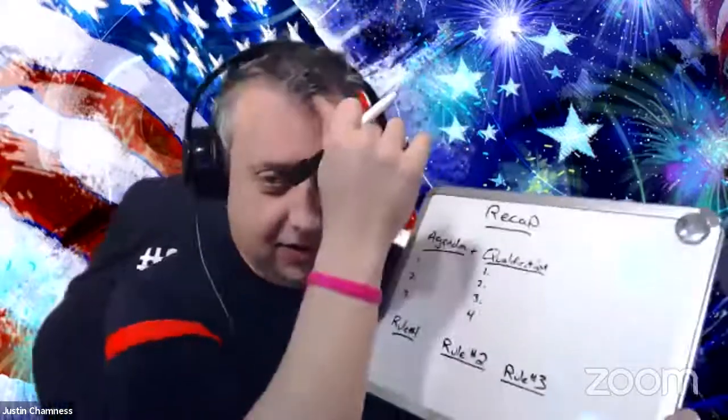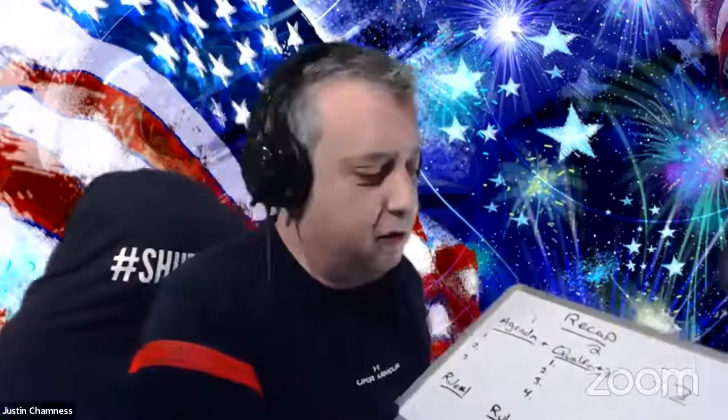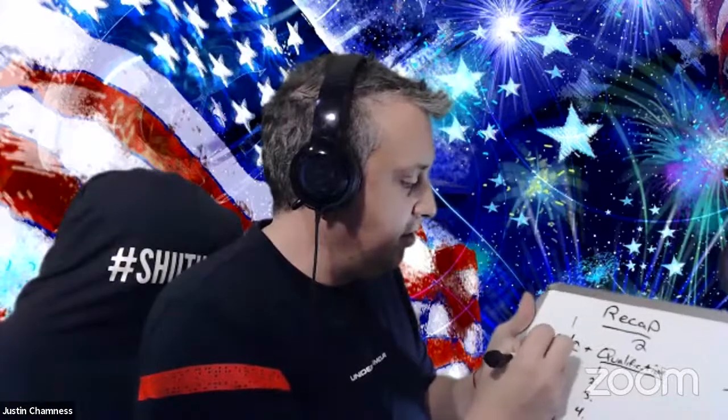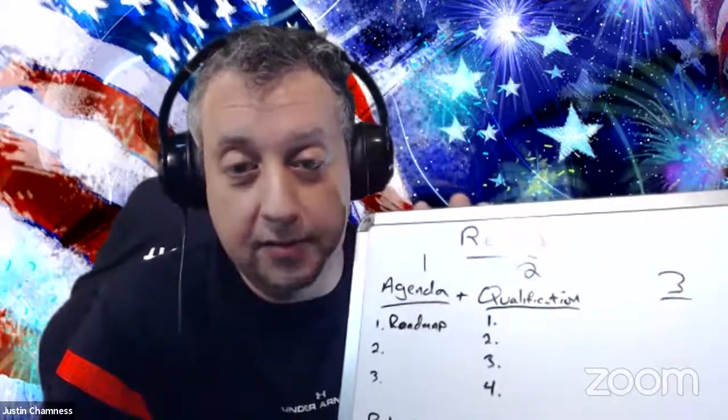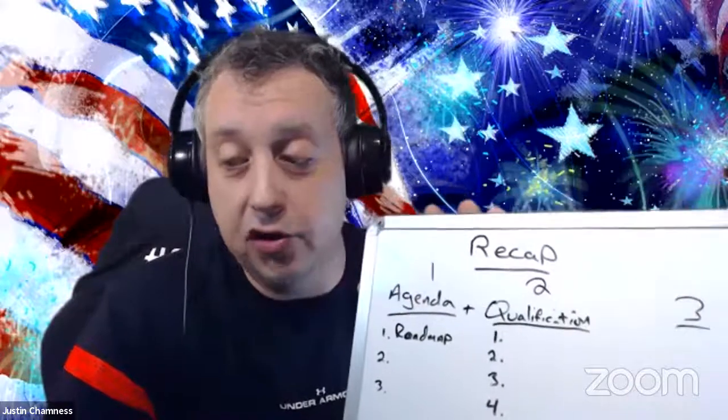Let's do phone stuff. On Wednesday nights we've been covering three sections: one is the agenda, two is the qualification section, and we haven't talked much about the closing yet. There are three rules. Let's recap before we dive into role playing. What are the three major things we want to remember about the agenda? Number one — you've got to lay out the road map. If you don't lay out the road map, the homeowner will take the conversation wherever they want.